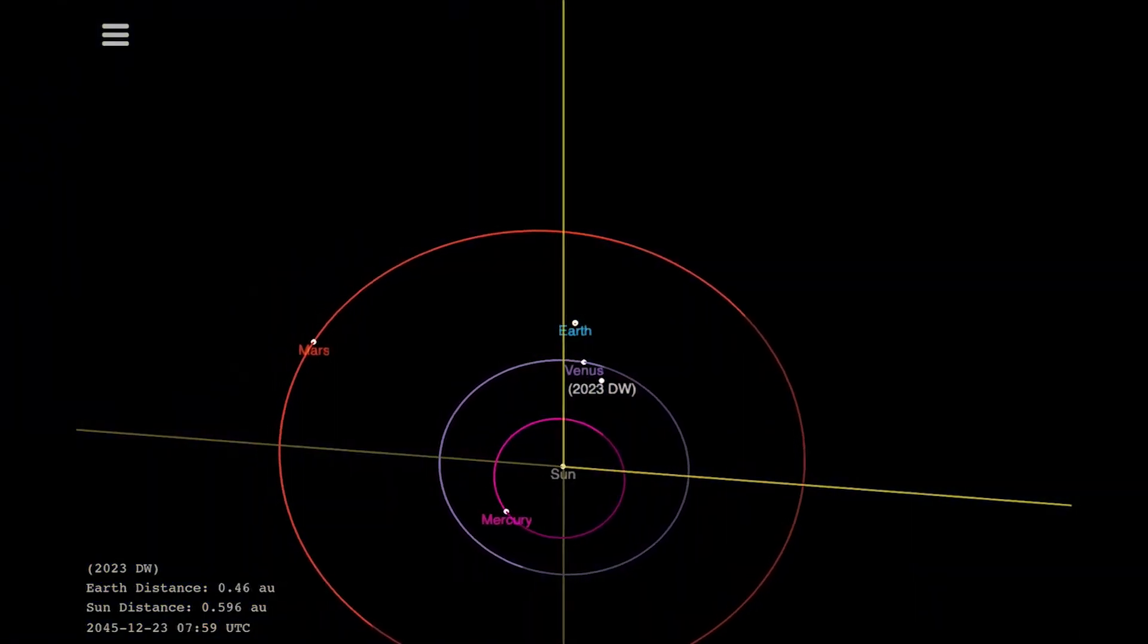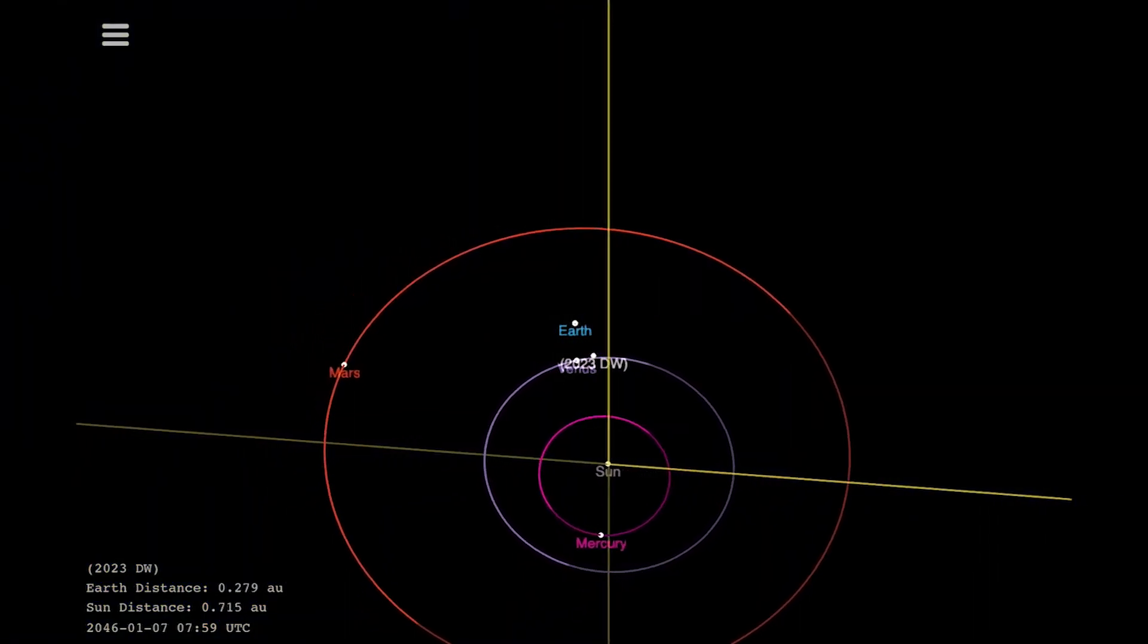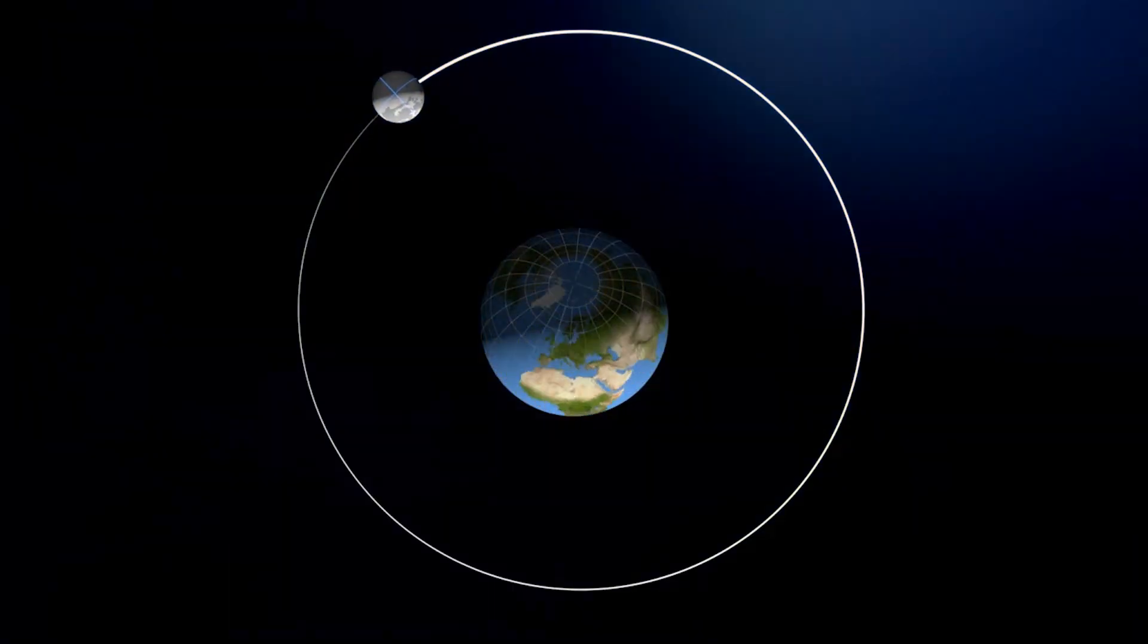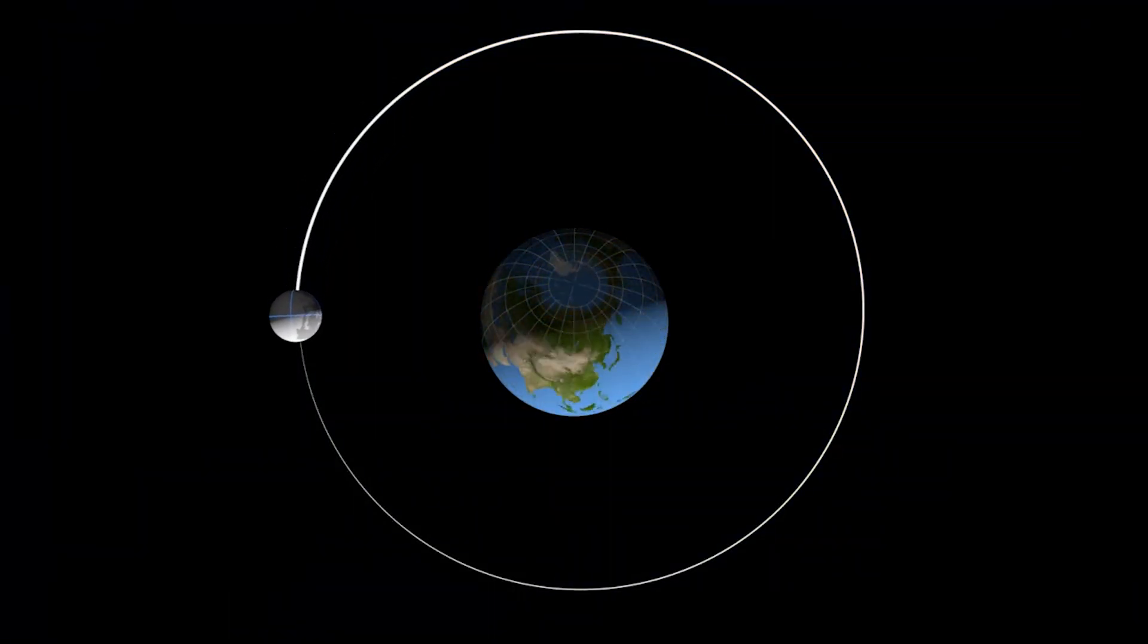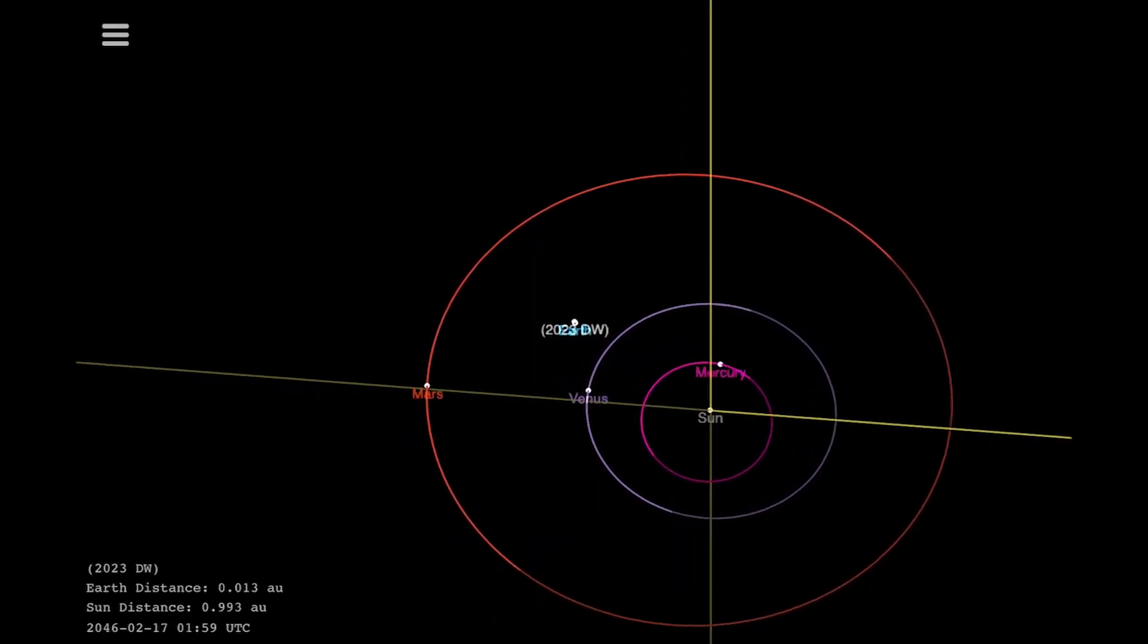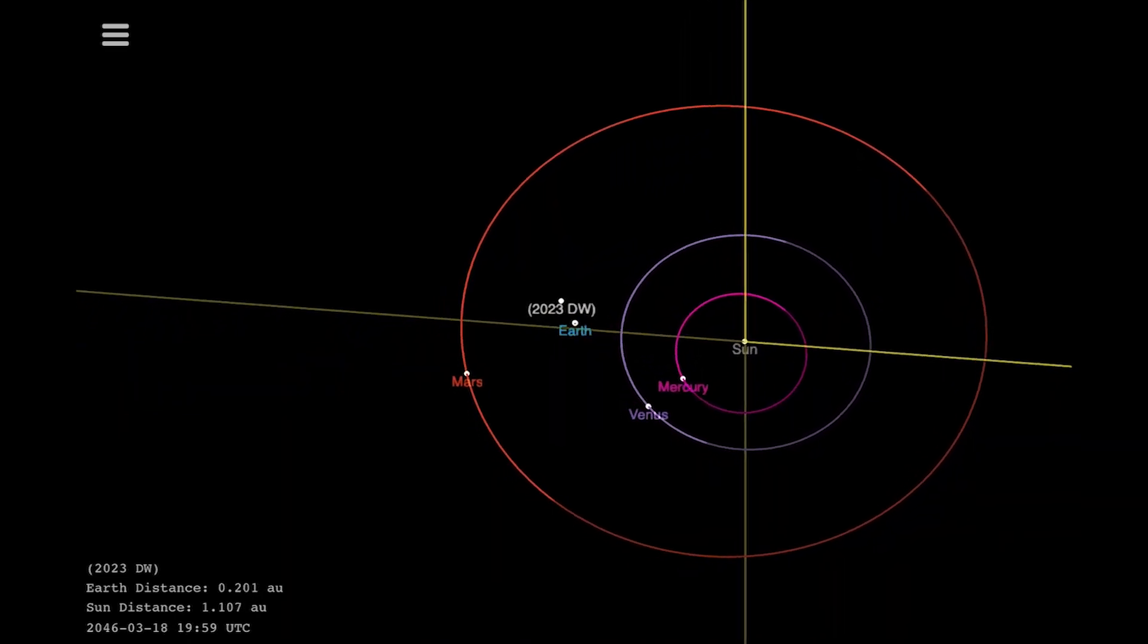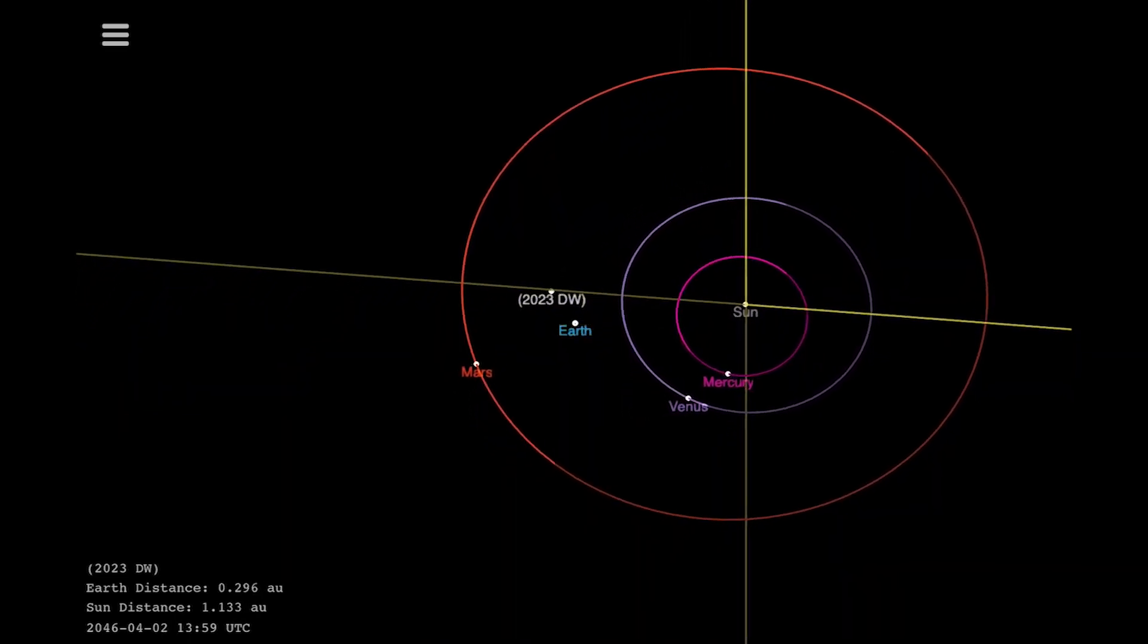One of the most intriguing aspects of 2023-DW is its orbit. Unlike our permanent moon, which orbits in a nice, predictable ellipse, this mini-moon's path around Earth is much more complex. It's caught in what astronomers call a horseshoe orbit.